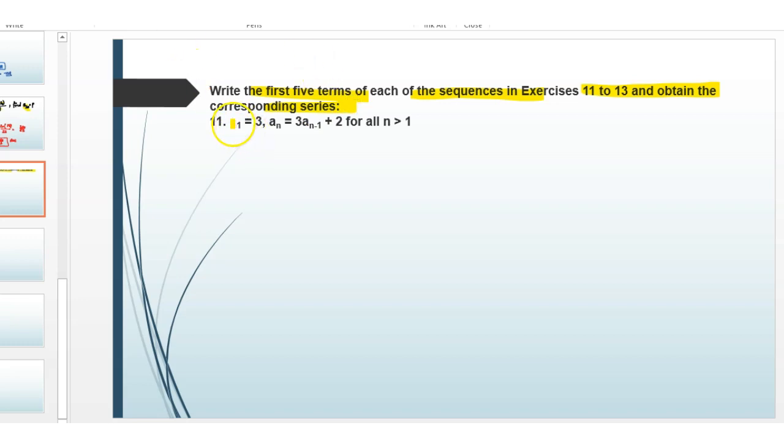First of all, we have here a1 equals 3, that is the first term, and the nth term an equals 3a(n-1) plus 2, where n is greater than 1. So here we put n greater than 1, that means 2, 3, 4, and so on.